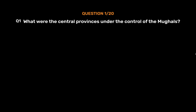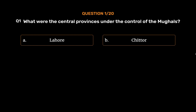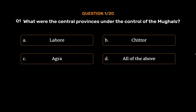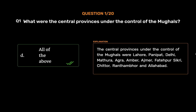Question 1: What were the central provinces under the control of the Mughals? Option A: Lahore. Option B: Chittad. Option C: Agra. Option D: All of the above. The correct answer is Option D, All of the above. The central provinces under the control of the Mughals were Lahore, Panipat, Delhi, Mathura, Agra, Ambar, Ajmer, Fatehpur, Sikri, Chittad, Rantambhor, and Allahabad.